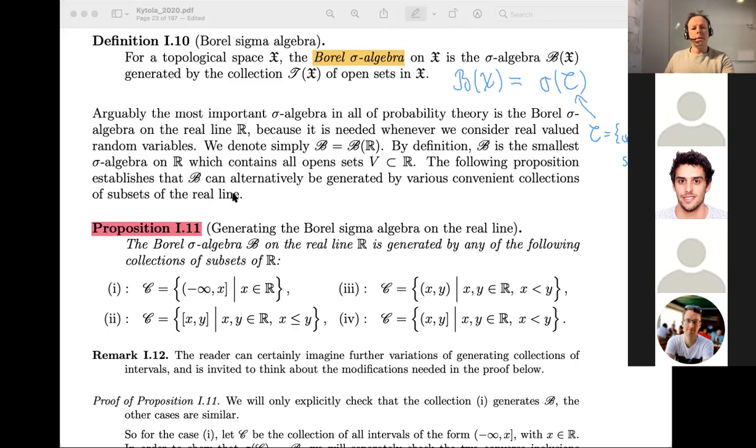In this proposition below, four different things are listed: collections of half-infinite intervals, closed intervals, bounded closed intervals, and so on. Four different collections of C that we could look at, and the claim is that each of these generates the Borel sigma algebra on the real line.